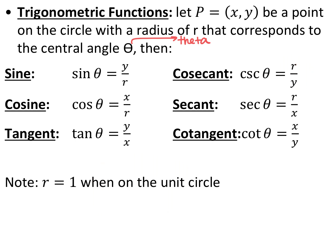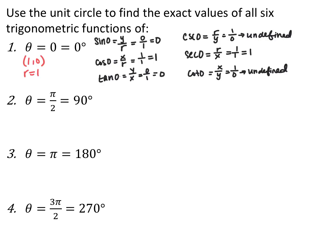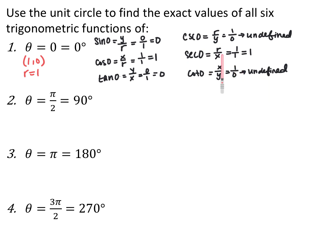We can use the unit circle to evaluate trig functions. For theta equals 0, the coordinate point is (1, 0) and radius is 1. Sine of 0 is 0 over 1 = 0. Cosine of 0 is 1 over 1 = 1. Tangent of 0 is 0 over 1 = 0. Cotangent of 0 is 1 over 0, which is undefined. Secant of 0 is 1 over 1 = 1. Cosecant of 0 is 1 over 0, which is undefined.